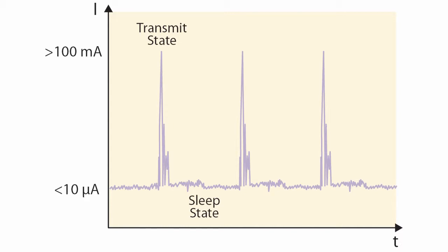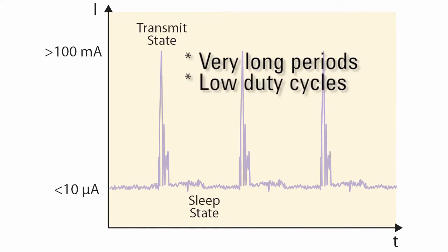This pulsed current profile has these characteristics: Very long periods, up to tens of seconds. Low duty cycles, from tenths of a percent to several percent. Extremely high crest factors, as much as 100 or more.